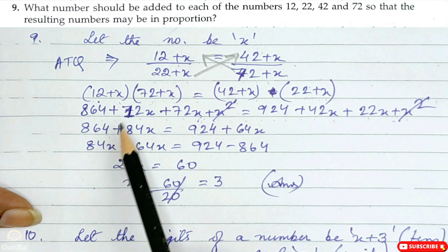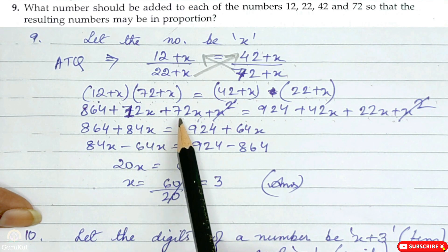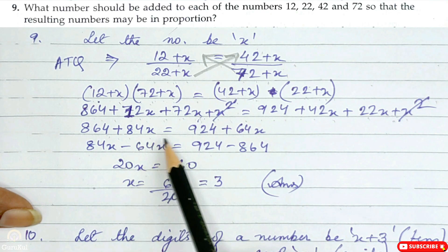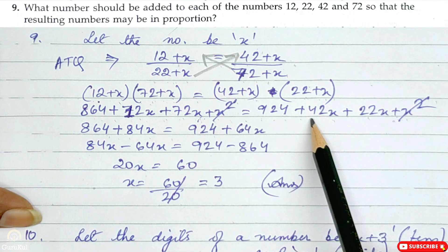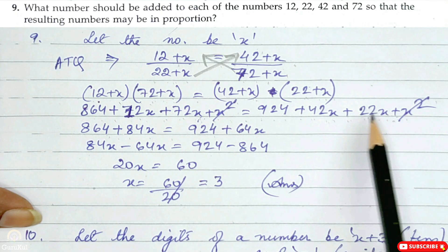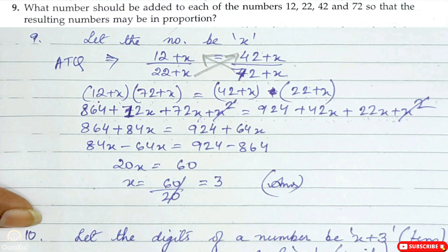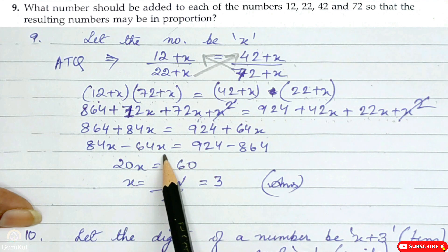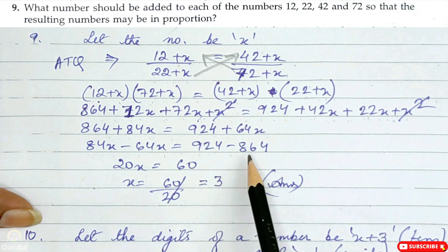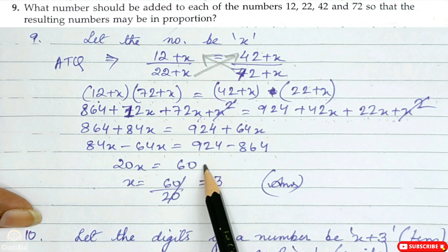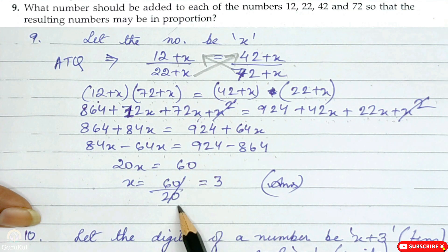So 864 plus 84x is equal to 924 plus 64x. Bring all x to one side: 84x minus 64x is equal to 924 minus 864. So 20x is equal to 60, and x is equal to 60/20 which is 3. This is the answer.